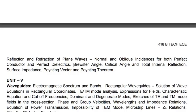Other topics include the Brewster angle, critical angle, and total internal reflection, as well as surface impedance, Poynting vector, and Poynting theorem. In this unit, the two long-answer topics are normal incidence and oblique incidences. The rest — Brewster angle, critical angle, and total internal reflection — are very small topics, and you may expect at least two or three of them combined in one question.